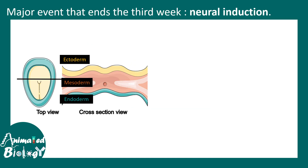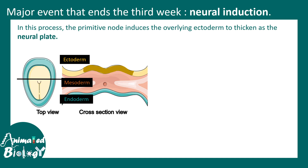The major event that happens at the end of the third week is neural induction, which is the key sub-process within neurulation. In this case, the primitive node induces the overlying ectoderm to form the neural plate, or neuroectoderm.